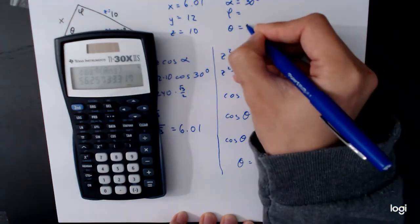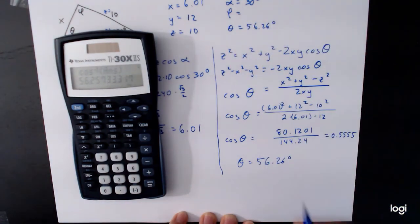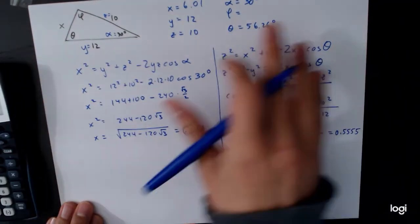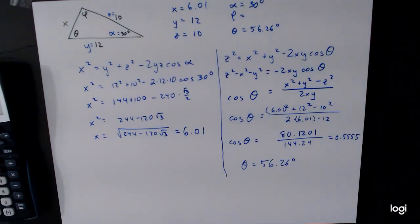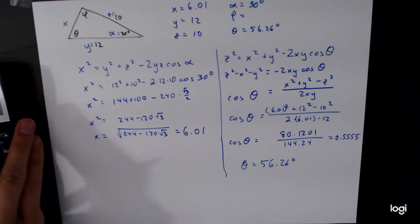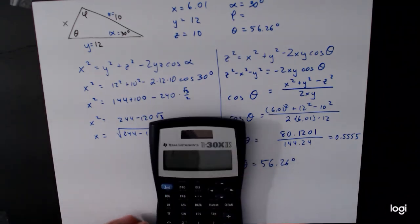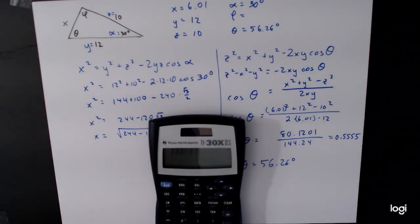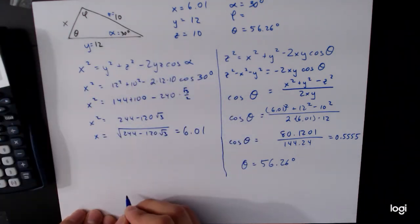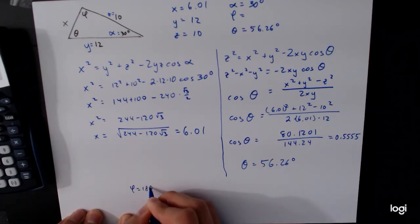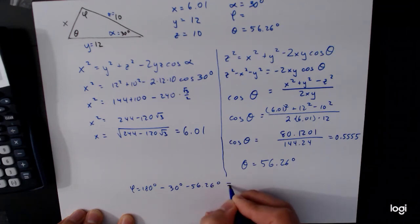We can go through this whole process again in order to get phi, or we can just use the fact that the sum of the angles adds up to 180 degrees. And so we'll just do it that way instead. And so we have 180 minus 30 minus 56.26 is equal to, let's see, so phi is 180 degrees minus 30 degrees minus 56.26 degrees, which is equal to 93.74 degrees.